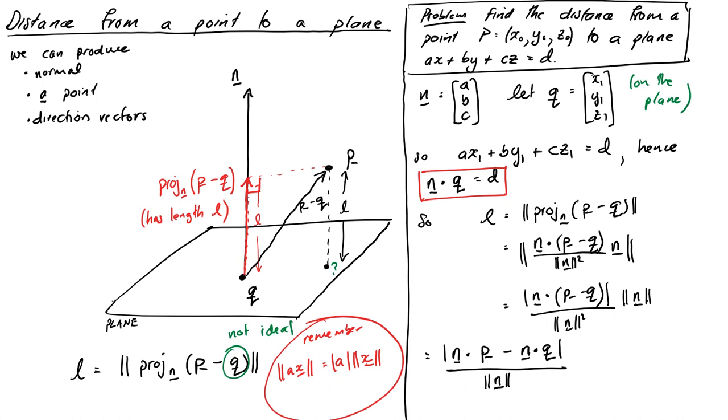Aha! This is looking better. So now's the moment we can get rid of that Q that we didn't want. So remember that N dot Q was just D. And similarly, N dot P is going to be AX naught plus BY naught plus CZ naught. You can go ahead and do that yourself if you want to just check that.